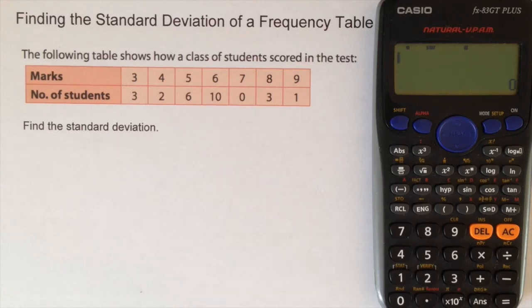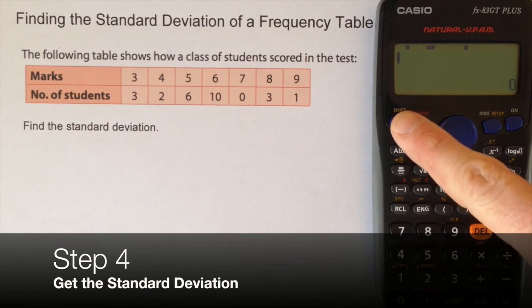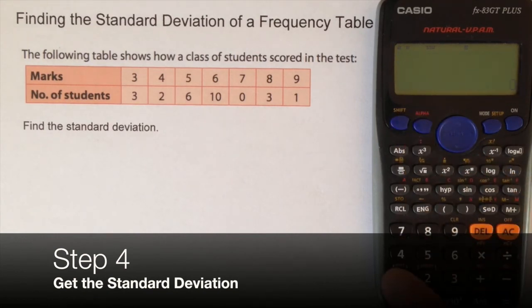Now don't panic, the information hasn't disappeared. Now I see above the button 1, it has STAT written in yellow. To activate a yellow button, I press the SHIFT. So I press SHIFT, 1.